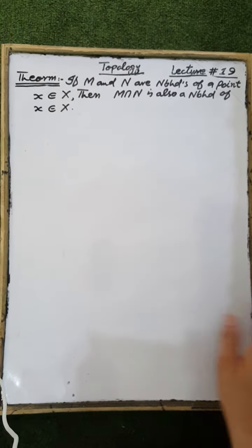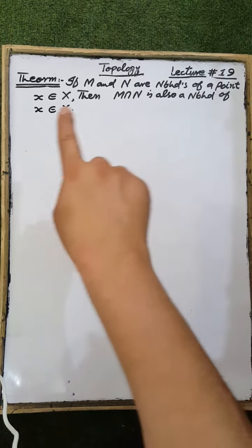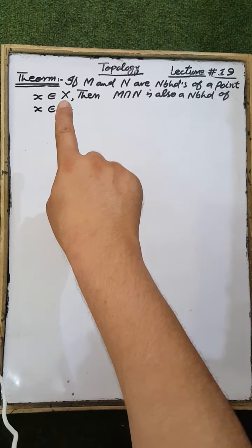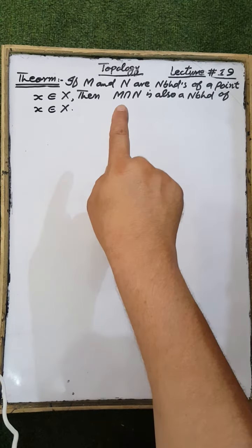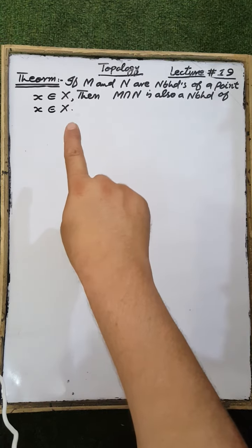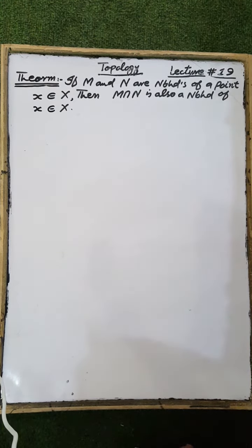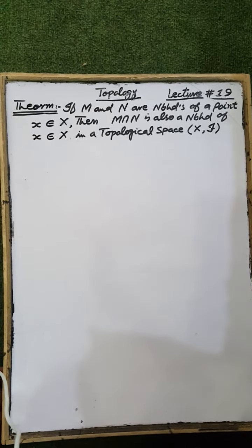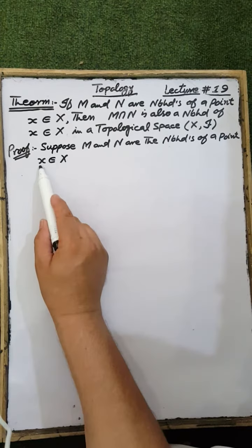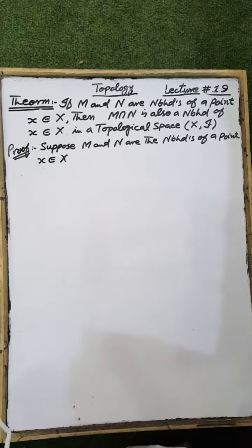Theorem: If M and N are neighborhoods of a point X contained in the ground set X of a topological space, then the intersection of M and N is also a neighborhood of the point X belonging to the ground set X of that topological space.